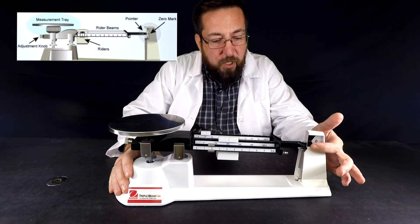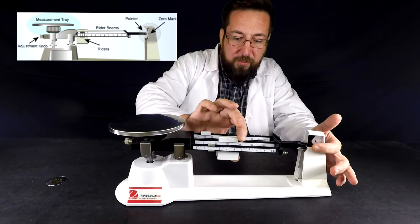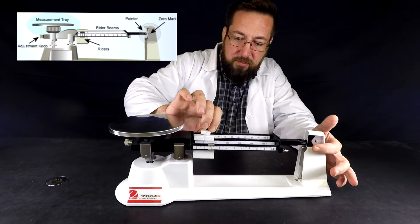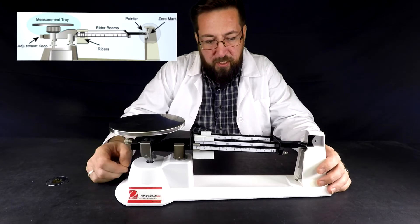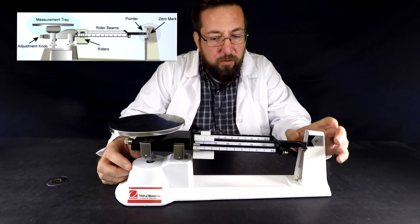First I've got the zero mark over here, the riders, the pan, the adjustment knob, and the rider bars.